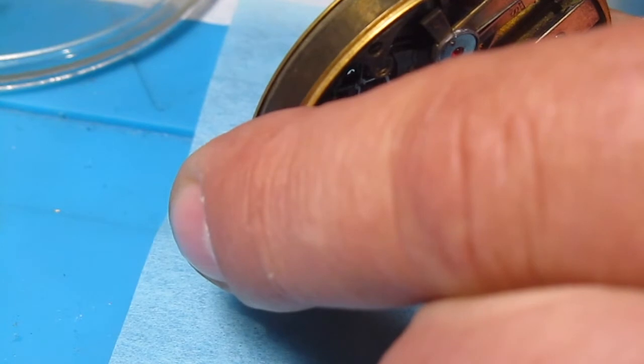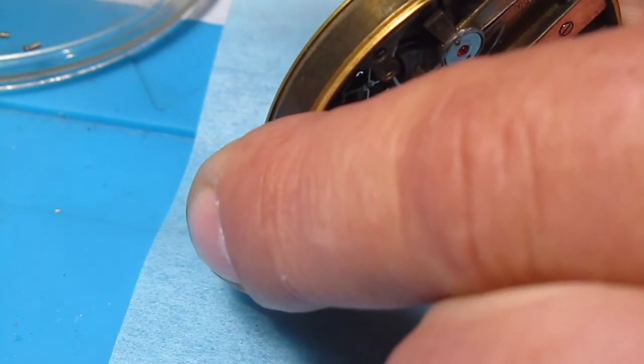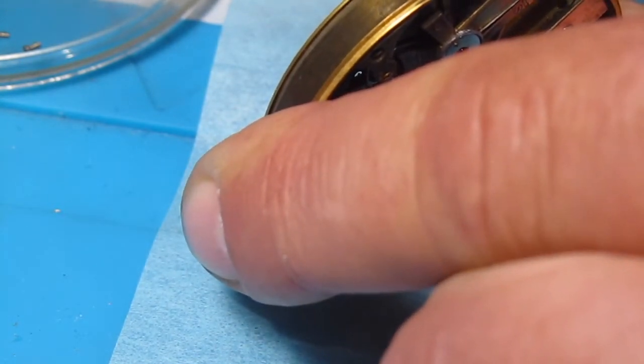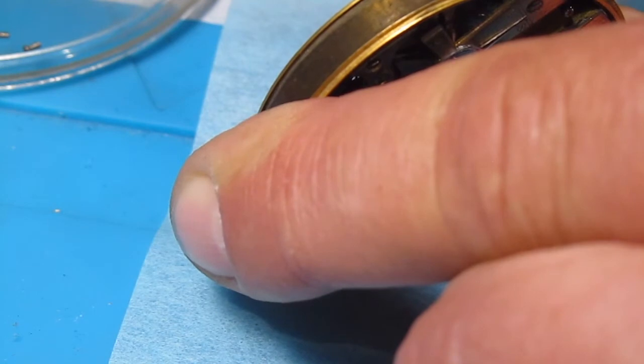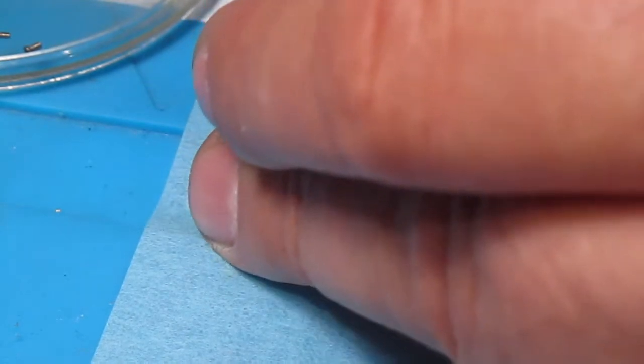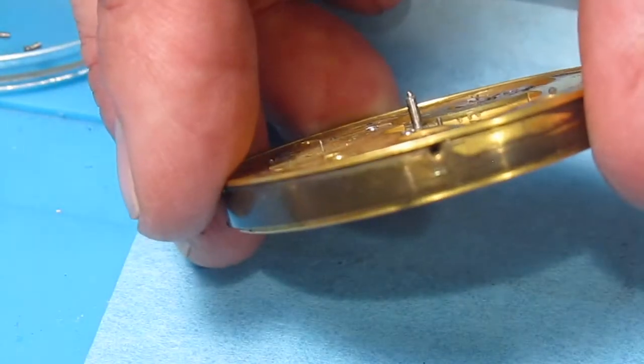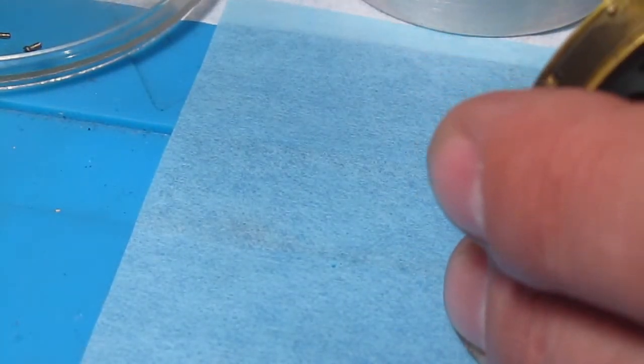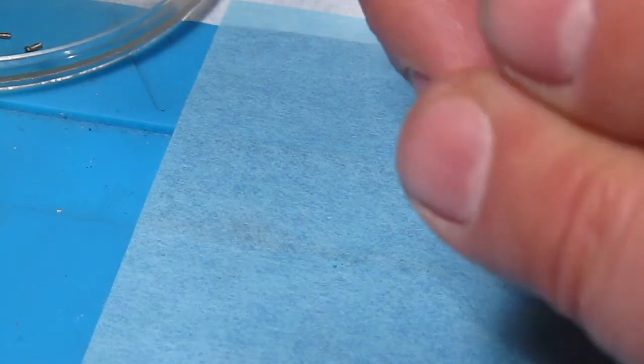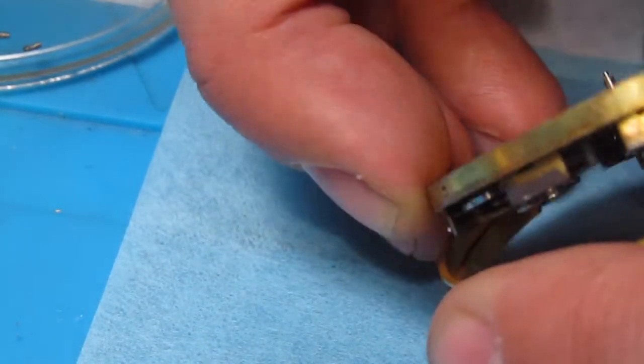Looks like these screws might even be non-interchangeable. So I'm going to do this. This is the short one. Now I can take and pry this open with slight pressure. Slight, slight pressure. As a matter of fact it doesn't need it. It's going to come right out of there.